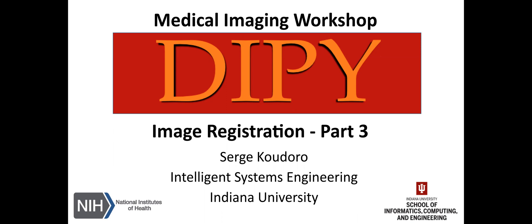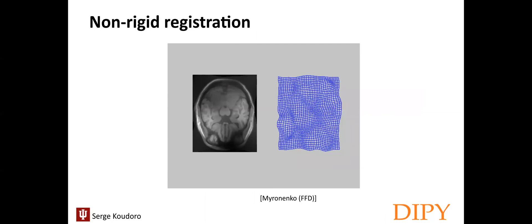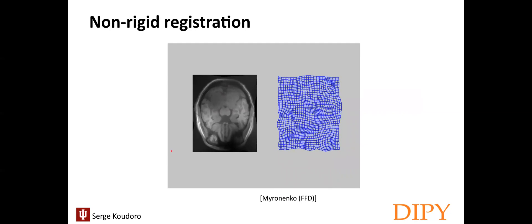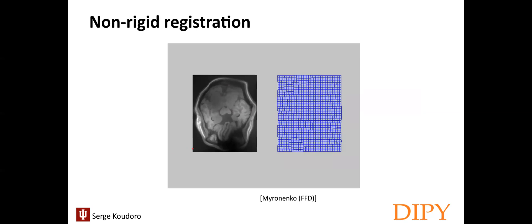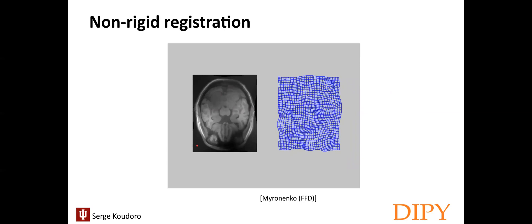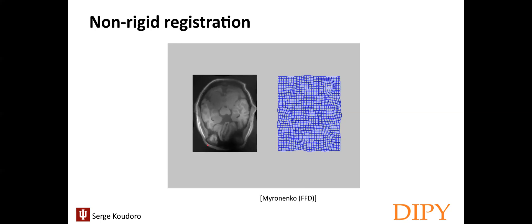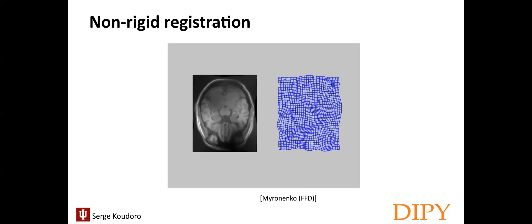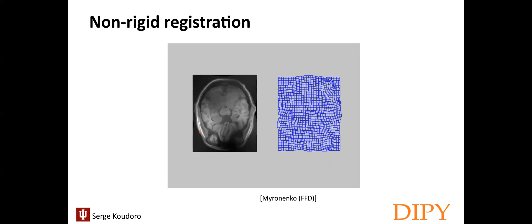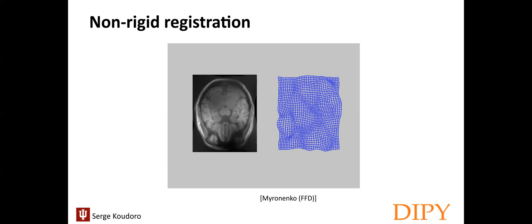In this part, we will focus on non-rigid registration. But what is non-rigid registration? Non-rigid registration methods are capable of aligning images where correspondence cannot be achieved without localized deformation. Localized deformation is like squashing a paper to fit as best you can a specific model. This family of registration methods can better accommodate anatomical, physiological, and pathological variability between patients.